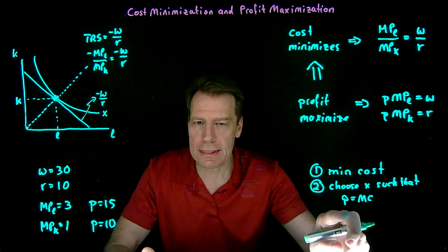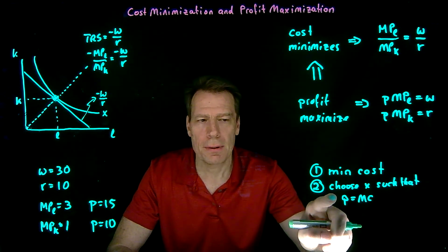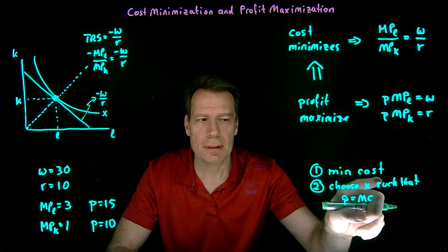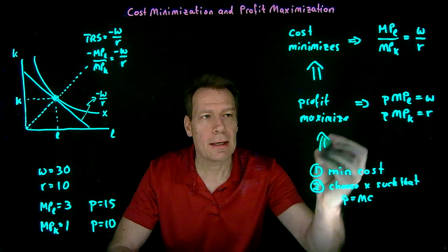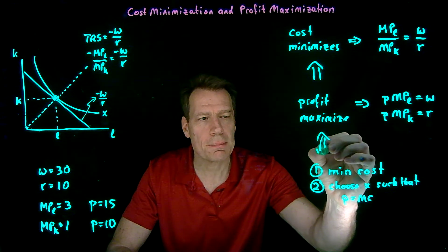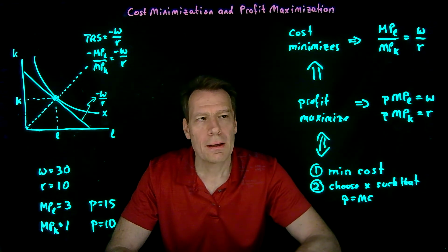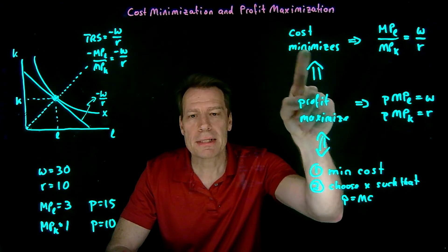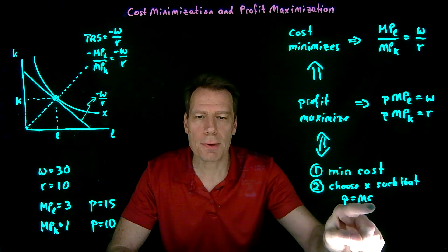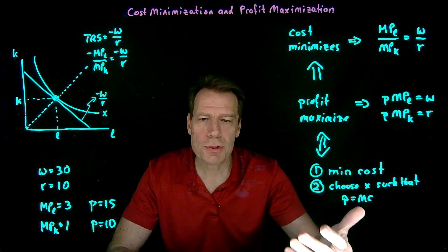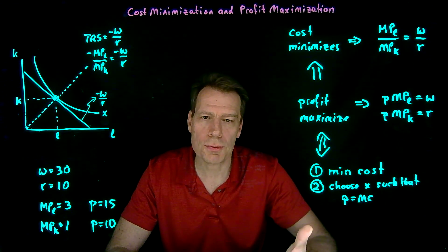It's when we add that second step to cost minimization that together these imply profit maximization, and direct profit maximization implies that these hold as well. So minimizing costs isn't enough to maximize profits. You also have to produce where price is equal to marginal cost. And once you do that, then these conditions, in fact, hold at the production plan that you've chosen.